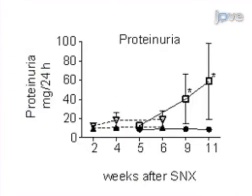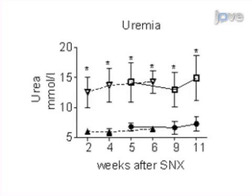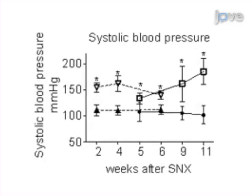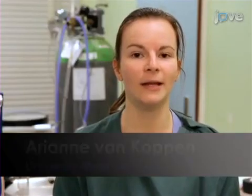Results can be obtained that show established chronic kidney disease through collection of urine for the measurement of protein and hematocrit, and urea in blood plasma and/or urine, and systolic blood pressure. Renal function is ultimately determined by inulin and para-aminohippurate, or PAH, clearance.